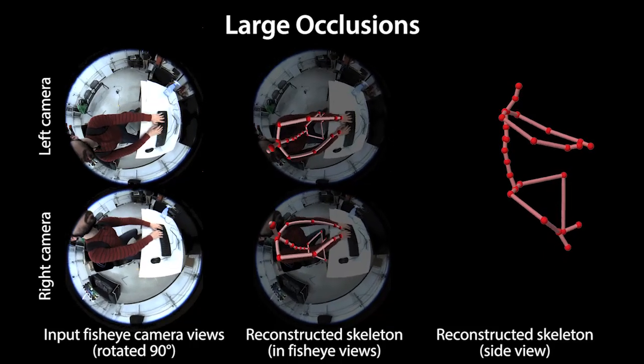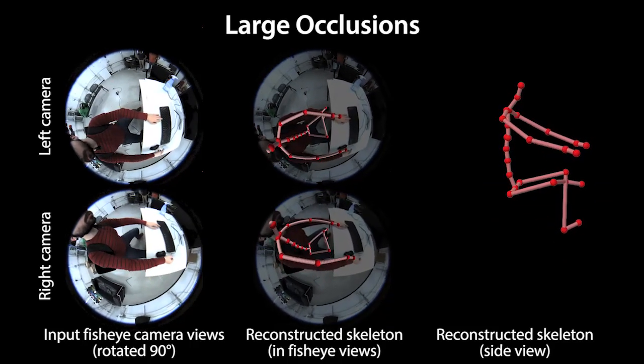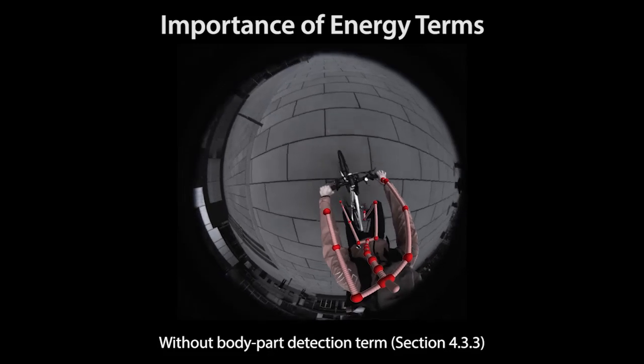Large occlusions by the environment, such as this table, can also confuse our tracker due to the missing pose evidence. Without body part detections, our tracker may lose limbs such as the left hand in this video.